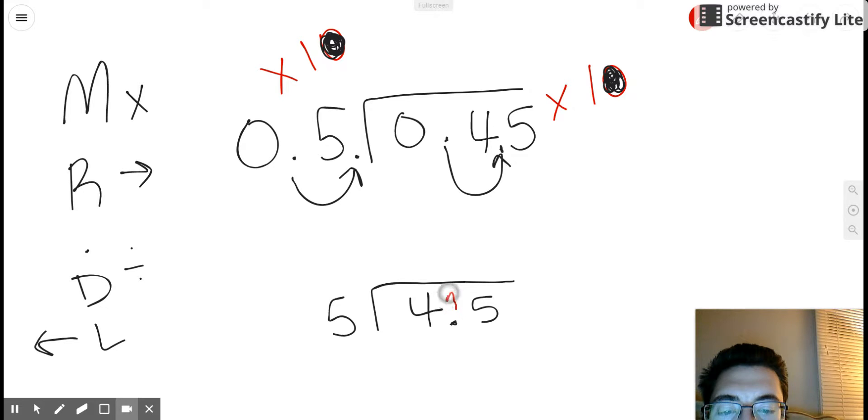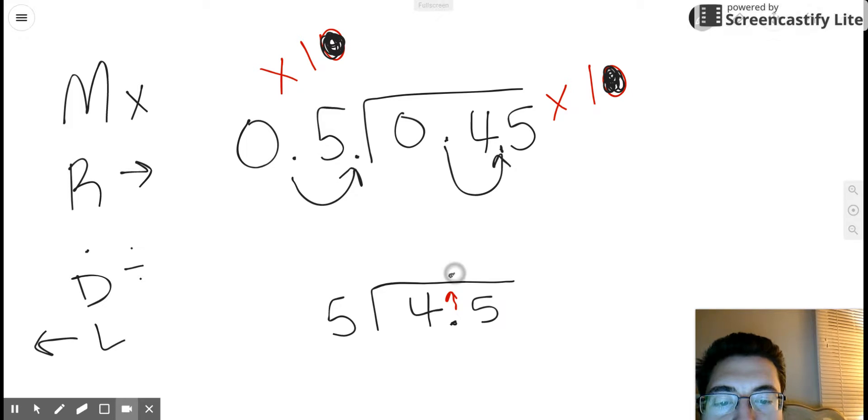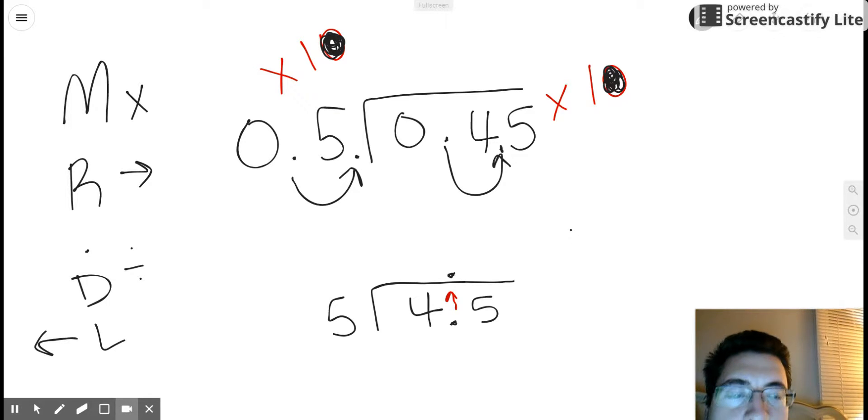So recall that the decimal point in a decimal division problem goes straight up into our quotient here. And then we just divide like normal.